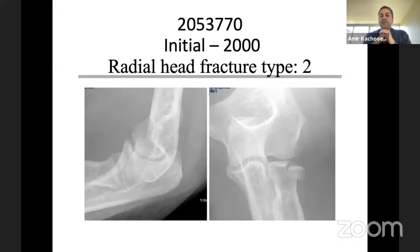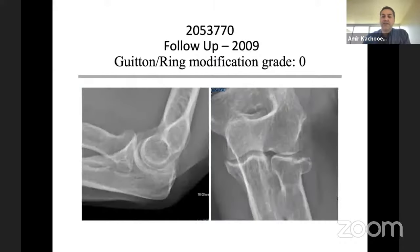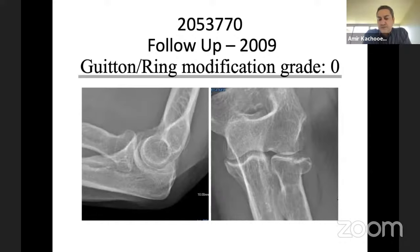Here is a Type II radial head fracture — more than 30% head involvement and/or 2 mm displacement or more. The initial X-rays show a Type II fracture from 2000, and in 2009, after nine years, you can appreciate it is well-healed in place. Even with a little step-off, there is no arthritis and it can be classified as grade zero arthritis.